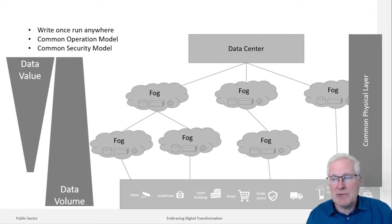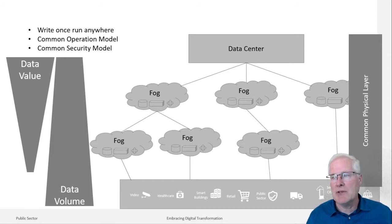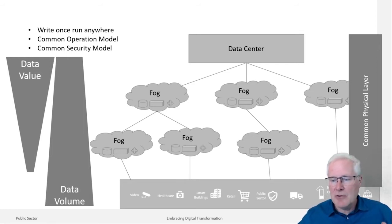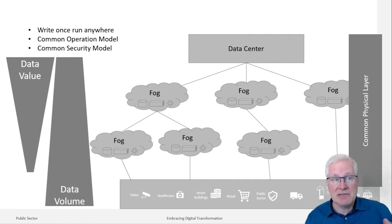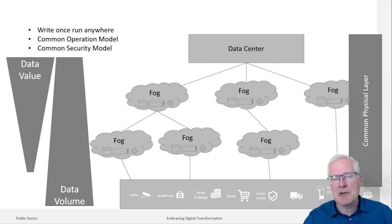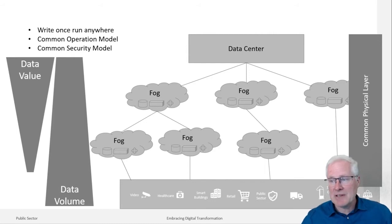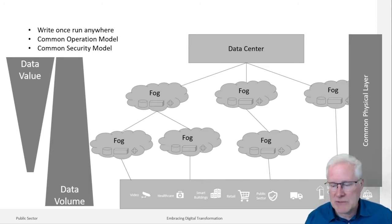Another benefit of the common physical layer is that if I write my application code, it could run anywhere in this ecosystem if I'm using a common CPU, common GPU, FPGA, or any kind of accelerator — as long as I have some way of describing that and can easily drop code onto those devices. There's great technology out of Intel for this, like OneAPI, that does a lot of that work for us. So I can write my code once, compile the binaries for different types of devices, push that down into the common physical layer, and it runs appropriately. The benefits: common operating model, common security model, and write-once, run-anywhere mode of operation.